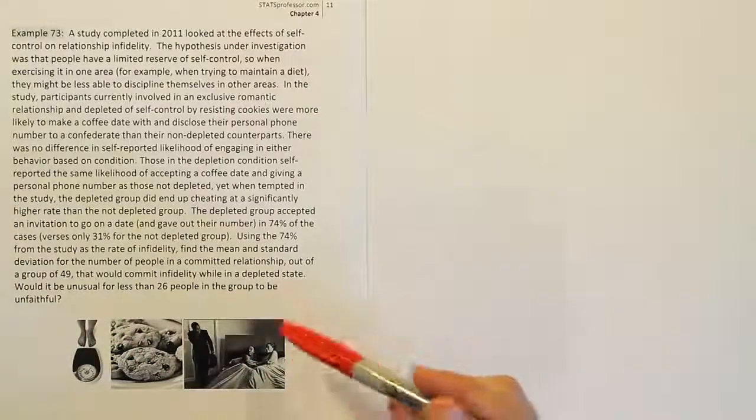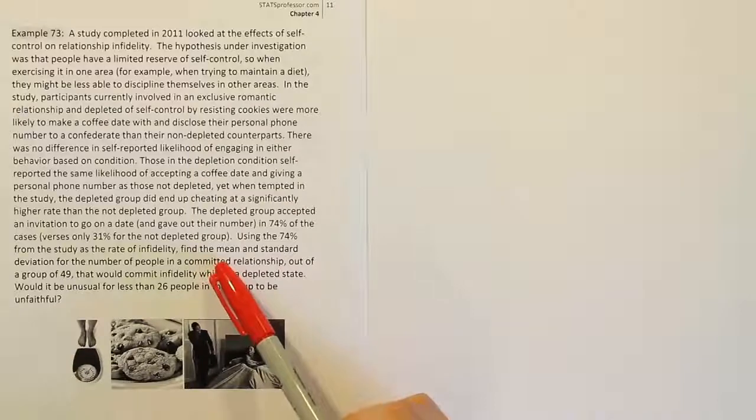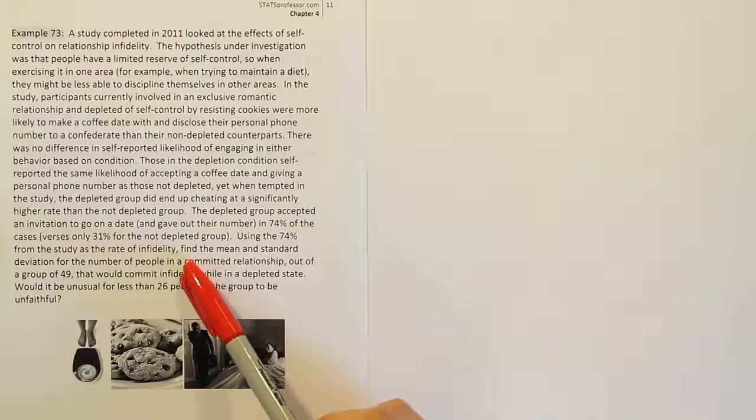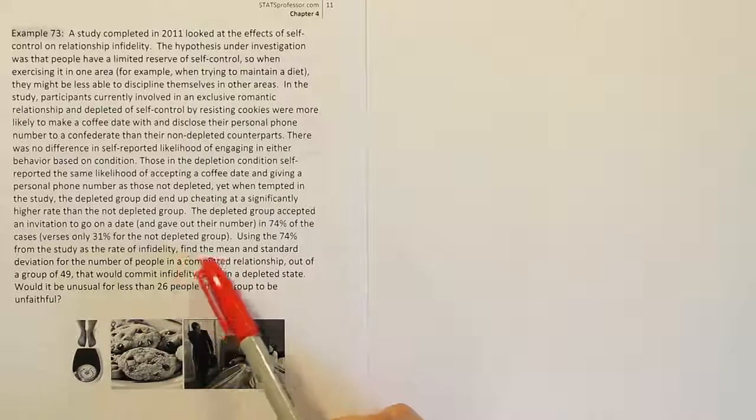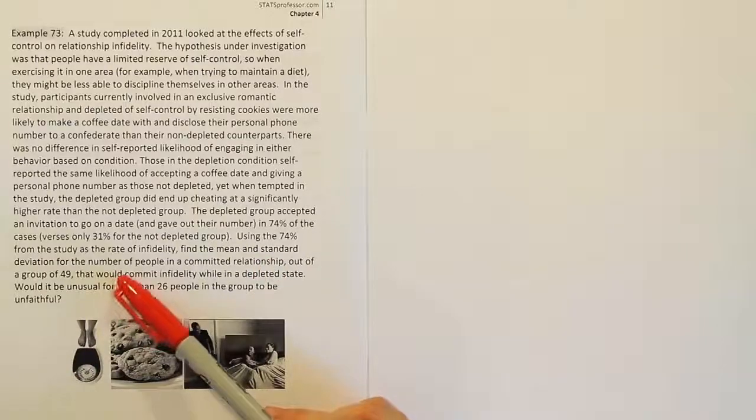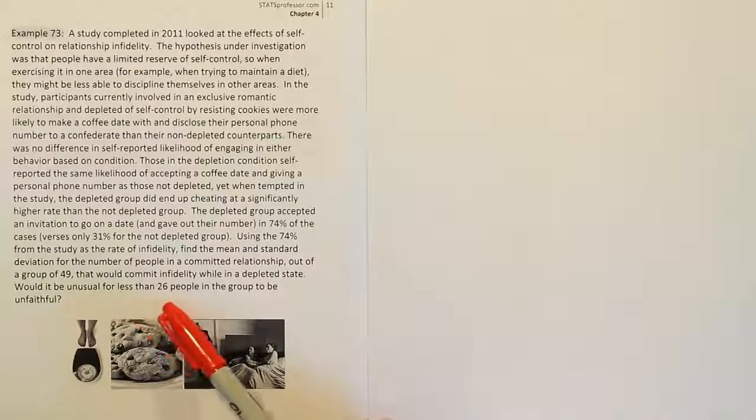Okay, so it's kind of a long paragraph but very interesting research, right? So what the problem asks us to do is actually three things. It says find the mean and the standard deviation, so that's two of them, and then answer this question if it would be unusual for less than 26 people in the group to be unfaithful. Okay, so let's start with the layout of the problem.